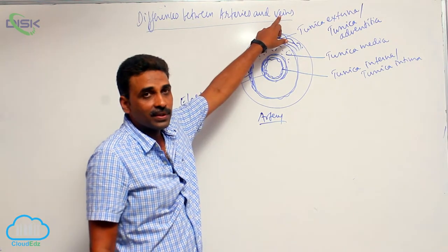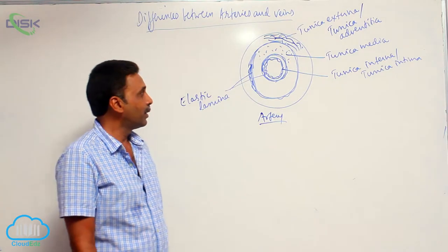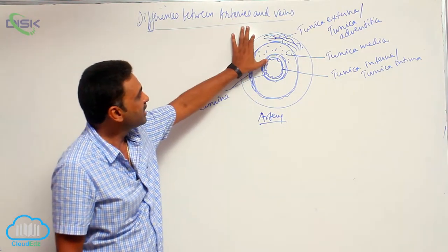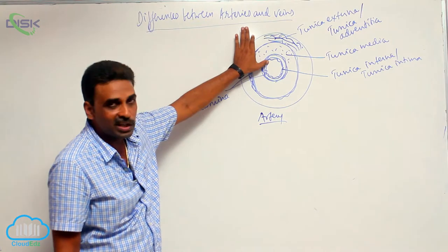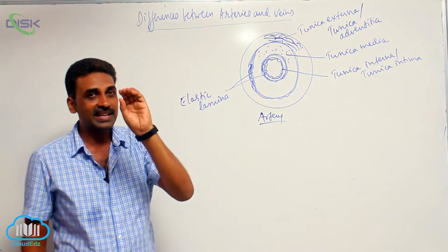If I take the veins, veins are also having the same three layers. But unlike arteries, in case of arteries you can see there is more thickness. But in case of veins, it is less thick.